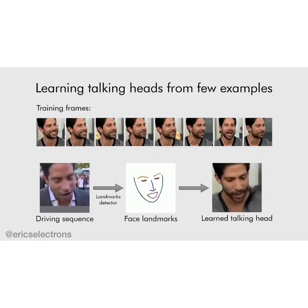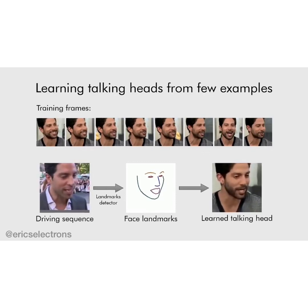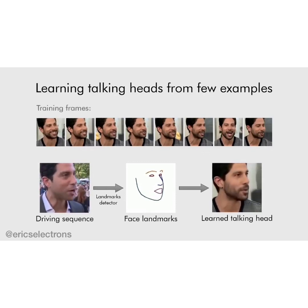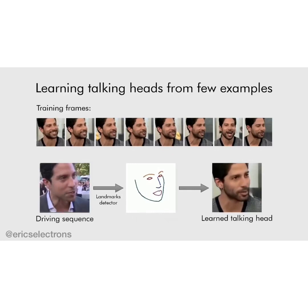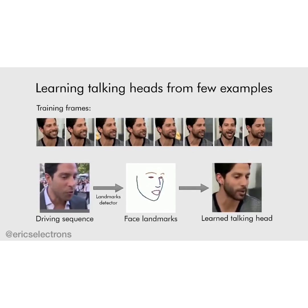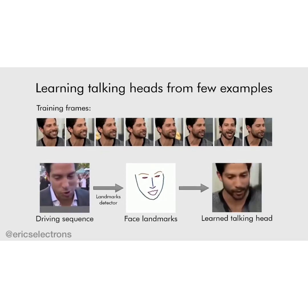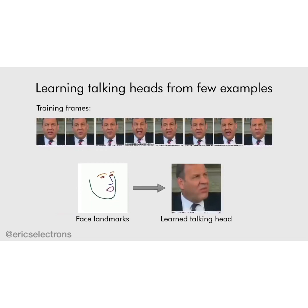We present a system that can learn realistic talking head models. Learning a new head model requires just a handful of images — in this example, the model was learned from eight frames. Once a talking head model is learned, it can be driven by the positions of face landmarks, extracted by running an off-the-shelf face landmark tracker on a different video of the same person. The learned model effectively serves as a realistic avatar, working well even for new view angles not present in the training examples.